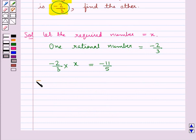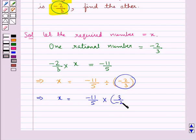This means that x is equal to minus 11 upon 5 divided by minus 2 upon 3. That is, x is equal to minus 11 upon 5 multiplied by the reciprocal of minus 2 upon 3 which is 3 upon minus 2.